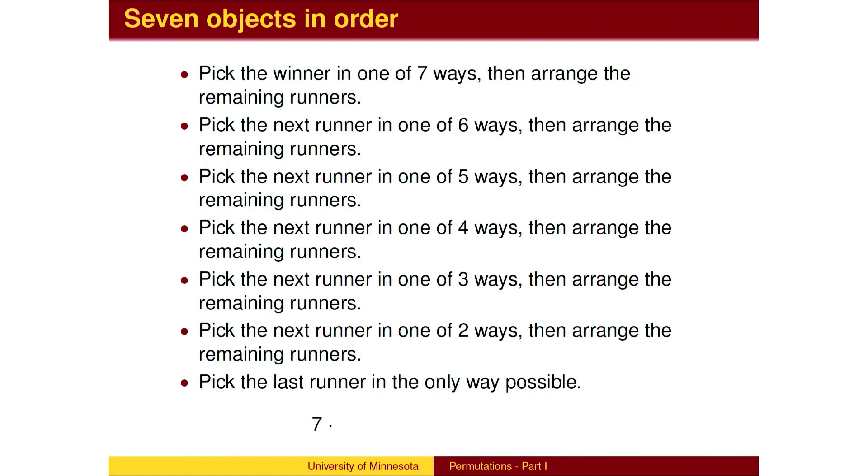The total number of permutations of seven runners is seven times the number of ways to permute the remaining six, which is six times the number of ways to permute the remaining five, which is five times the number of ways to permute the remaining four. We continue this recursion until all the runners have been placed.